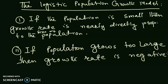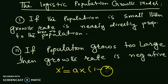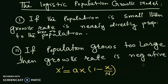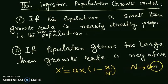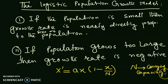We want a model that satisfies these two assumptions, and luckily we have one: x' = ax(1 - x/N). Here, 'a' is the rate of population growth — it is a constant that gives the rate of population growth when the population is small. 'N' is the carrying capacity.